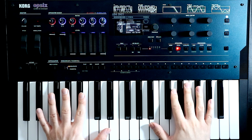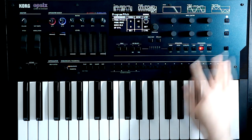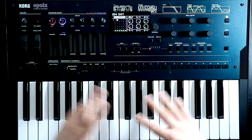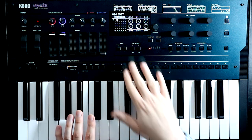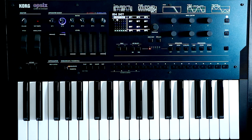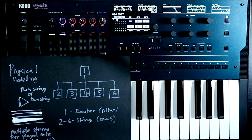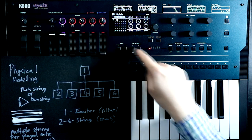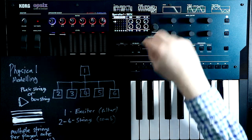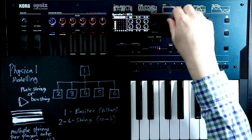So we're going to start by coming over to the algorithm page, push that over to user and come into the miscellaneous menu to set up our user algorithm. We want operators two through six to be what we actually hear, so we'll turn on two, three, four, five, and six. Then in terms of routing: operator one is not going to receive anything, and we're going to route one into two, one into three, one into four, one into five, and one into six. Pretty simple user algorithm.